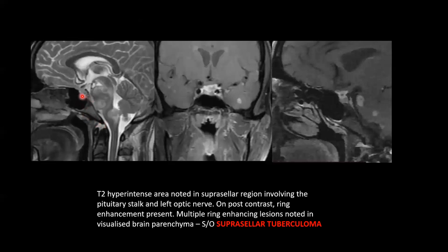T2 hyperintense lesion seen in the suprasellar region involving the pituitary stalk and left optic nerve. On post-contrast study, rim enhancement is seen. Multiple rim-enhancing lesions are noted in the visualized brain parenchyma. This is a case of suprasellar tuberculoma.